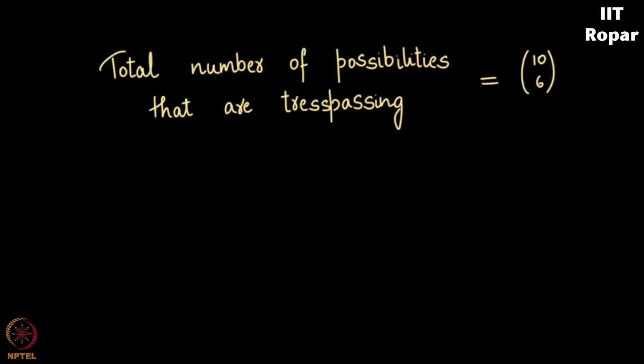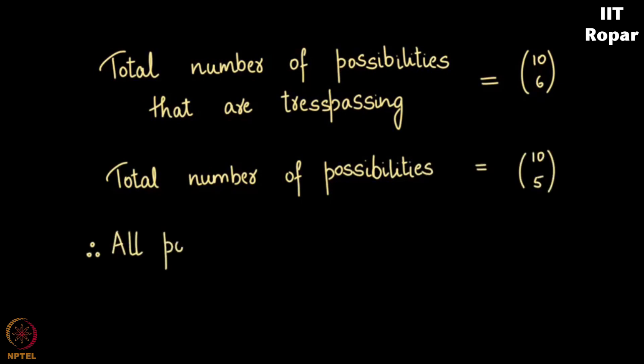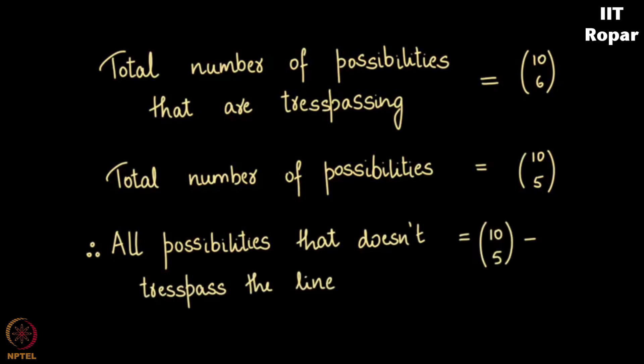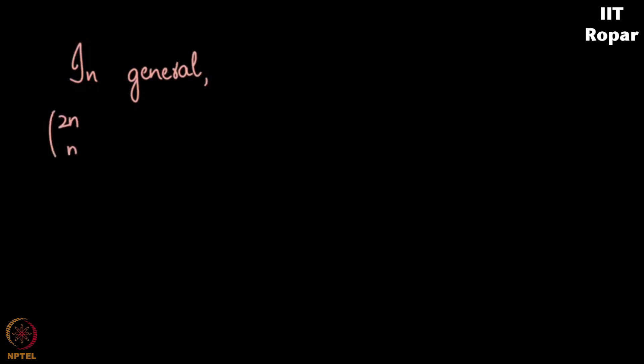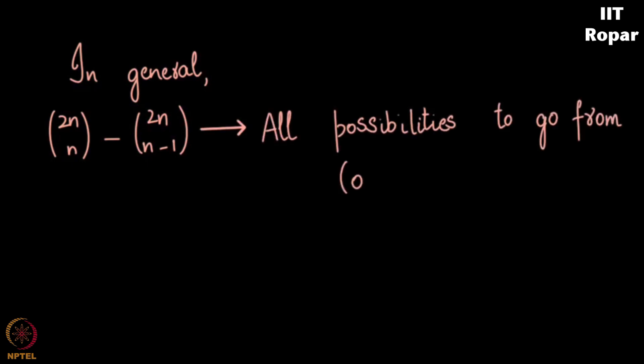And hence the total number of possibilities that are trespassing are precisely (10 choose 6), and I want to subtract this from (10 choose 5) which is total number of possibilities. So my final answer of all those possibilities that doesn't trespass the line is (10 choose 5) minus all the invalid ones trespassing - (10 choose 6). Observe, we can even generalize this and we get (2n choose n) minus (2n choose n-1) as the answer for the question when you want to move from (0,0) to (n,n) without trespassing the line.